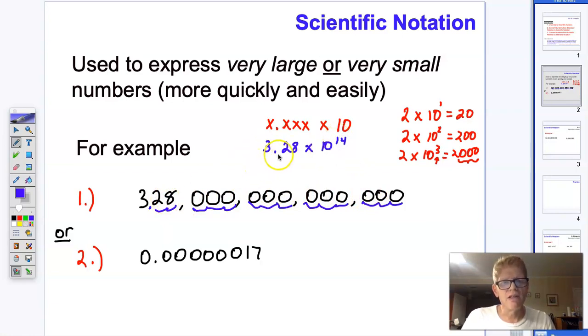And what that means is, if I take 3.28, and I multiply it by 10 to the 14th power, I'm going to move that decimal point 1, 2, 3, 4, 5, 6, 7, 8, 9, 10, 11, 12, 13, 14. And that's going to give me my answer. The answer in this case being just a simpler way to write this very large number.